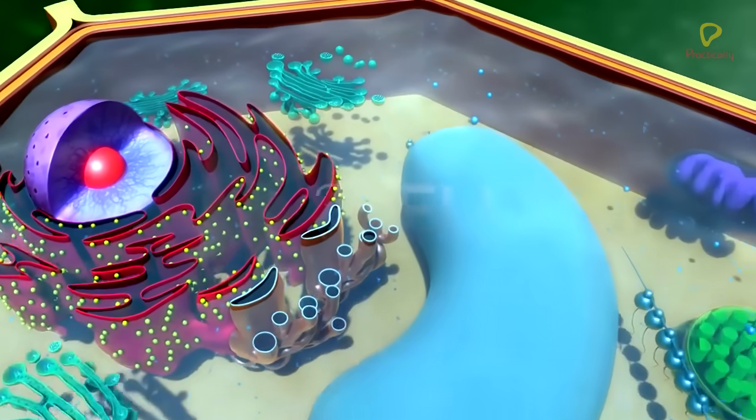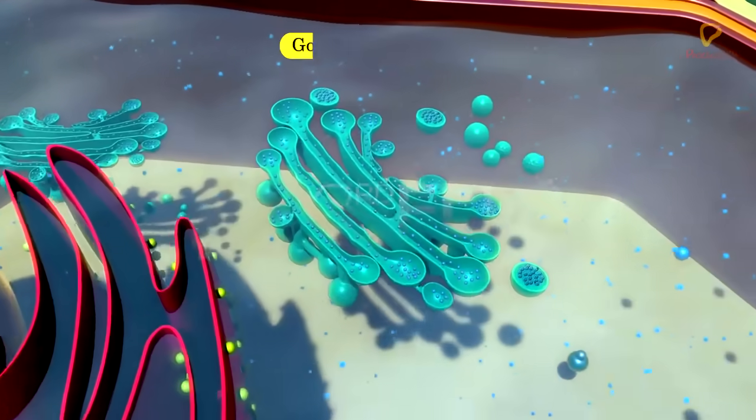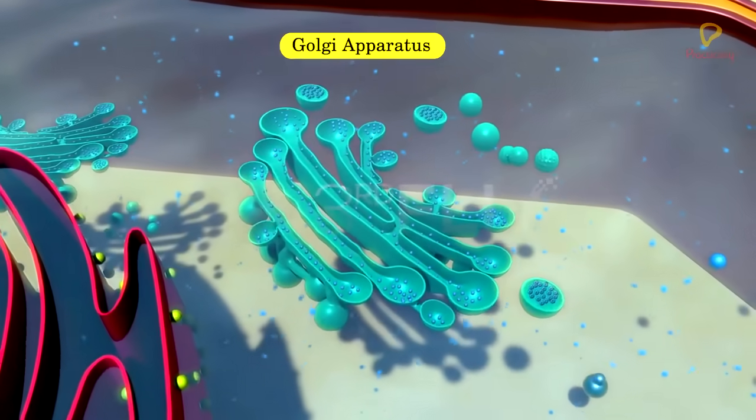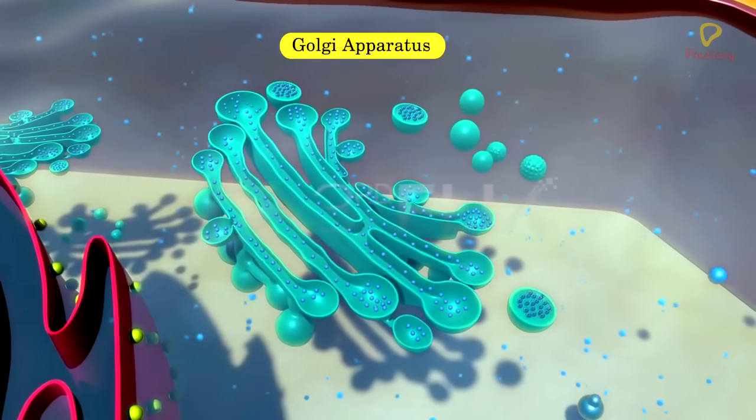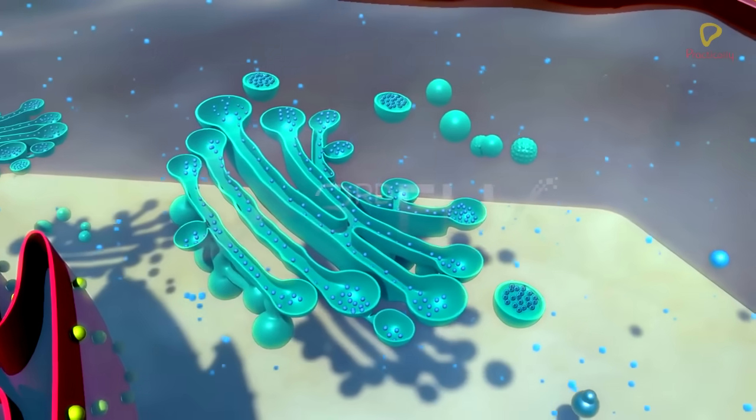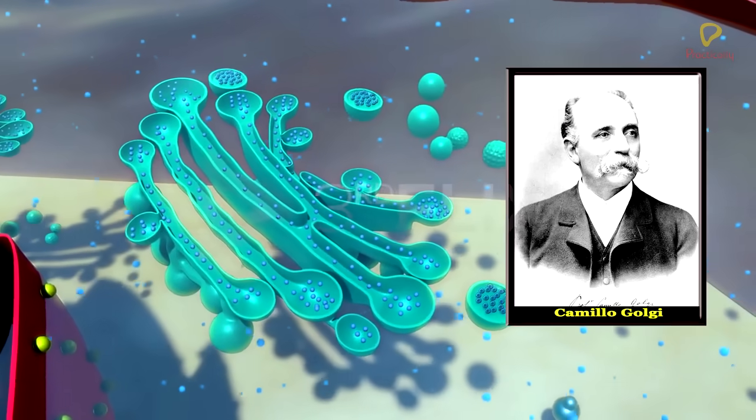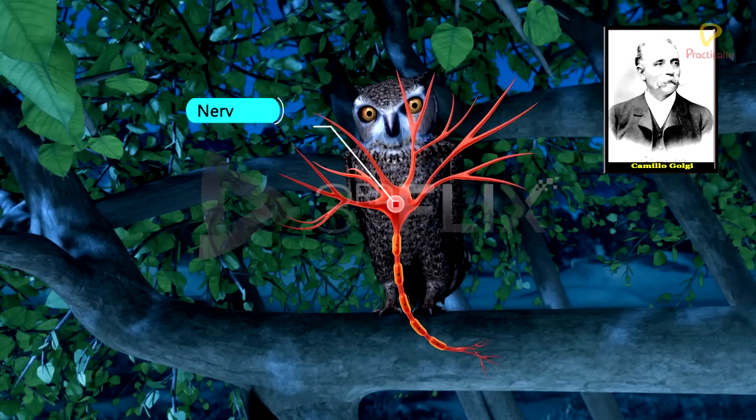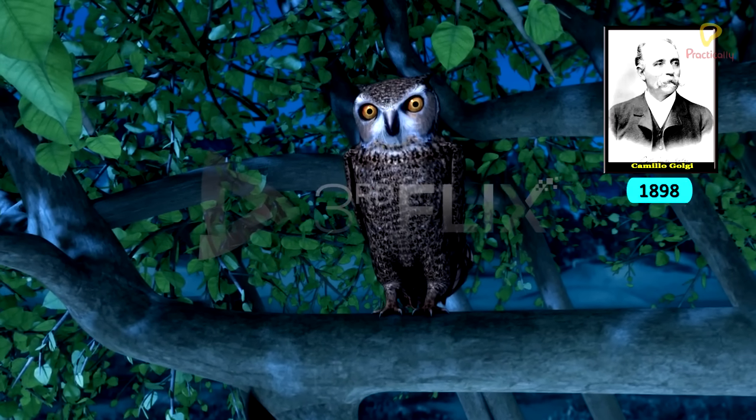Objective: To study about the Golgi apparatus. Golgi apparatus was first discovered by the Italian cytologist Camillo Golgi in the nerve cells of Owl in 1898.